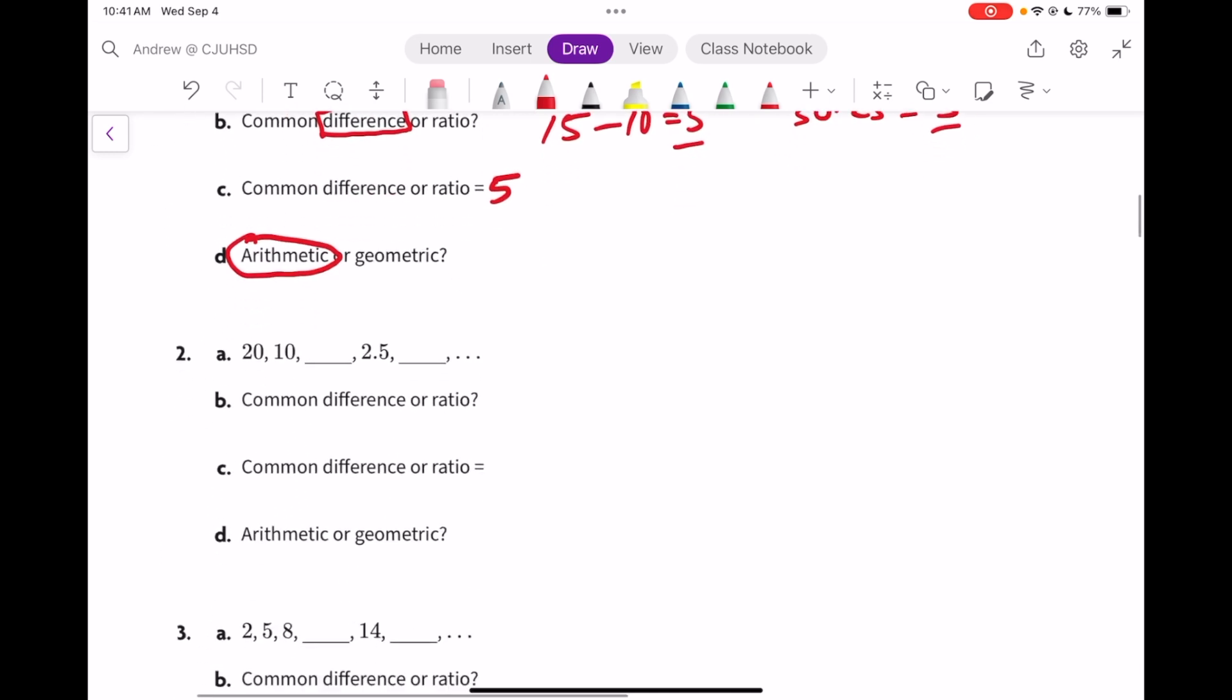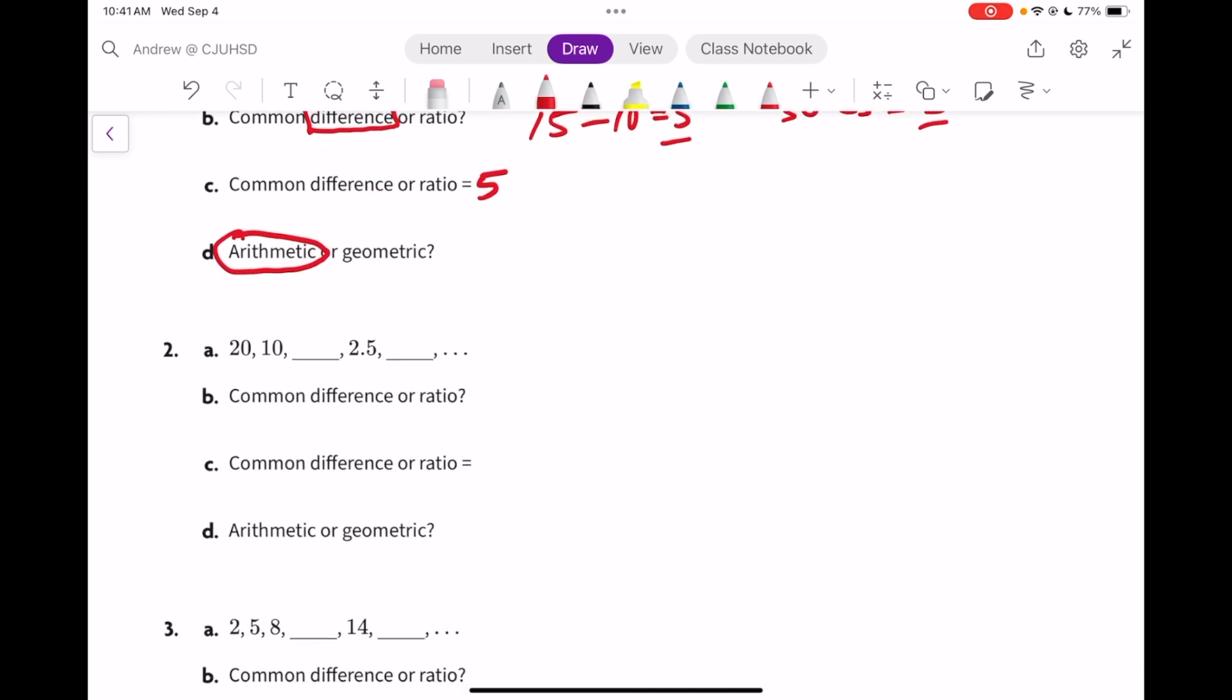Now in number 2, it's not subtracting. It's actually multiplying by a number between 0 and 1. Take a number, divide by the one that came before it. That tells you the common ratio. So it's a ratio. It's 0.5, and this is geometric. By the way, the missing parts here would be half of 10 would be 5, and half of 2.5 is 1.25.